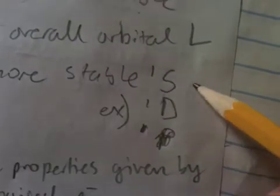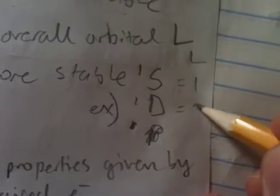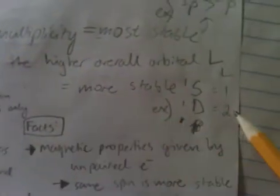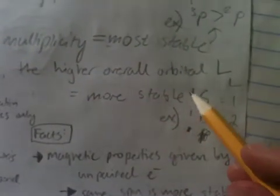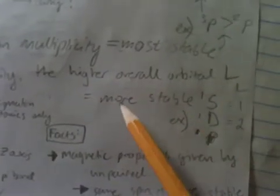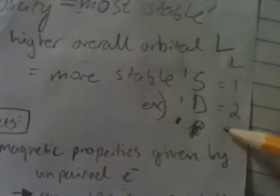So, remember, S, that is your angular momentum of 1. And these are angular momentum of 2. So, Hund's rule states that for a given multiplicity, so they have the same S, multiplicity 1 and 1, the higher overall orbital angular momentum is more stable. So, which one has the higher orbital angular momentum? If you chose 1D, or a singlet D, you'd be correct.